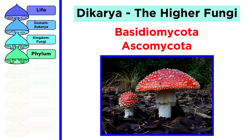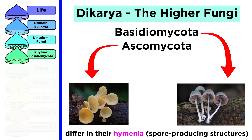As it is a multicellular fungus, the fly agaric falls into the subkingdom dikarya, and more specifically is placed into the phylum basidiomycota. The main difference between mushrooms within the basidiomycota and ascomycota are the spore-producing structures, or hymenium, on their respective sporocarps or fruiting bodies.